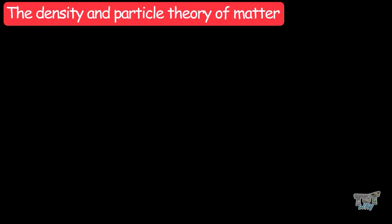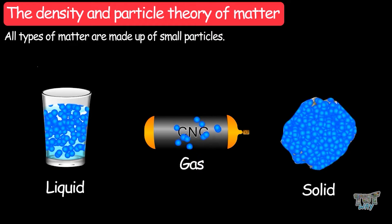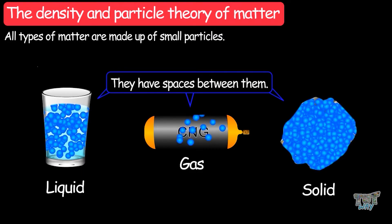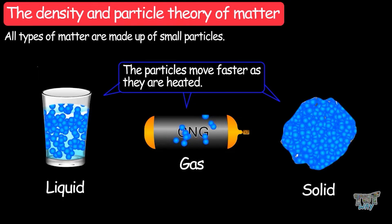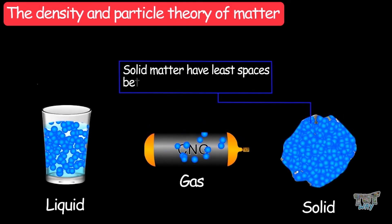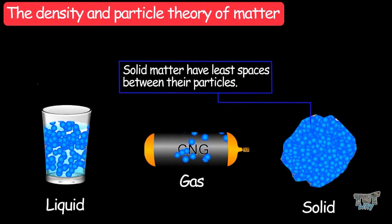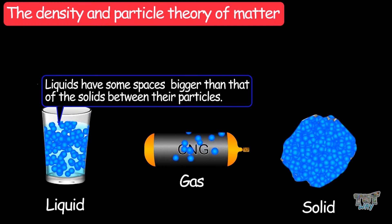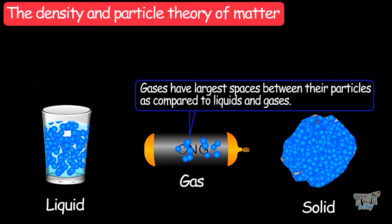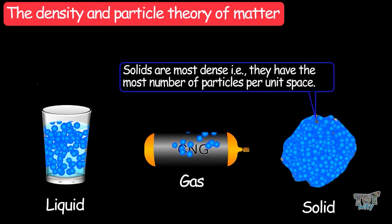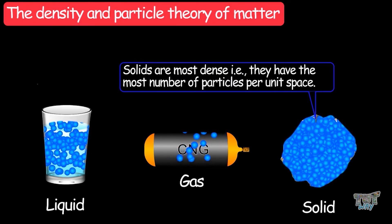Now let's try to relate density and the particle theory of matter. All types of matter are made up of small particles, and they have spaces between them. Particles continuously move and attract each other, and particles move faster as they are heated. Solids have the smallest spaces between their particles, so solids are more dense — they have the most number of particles per unit space.